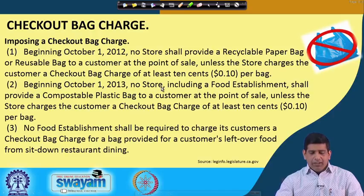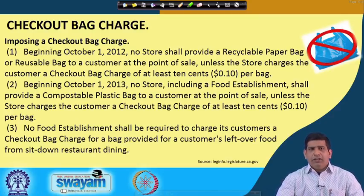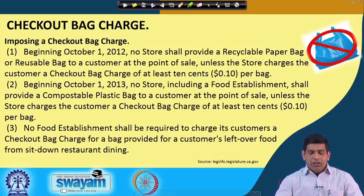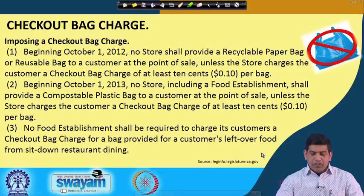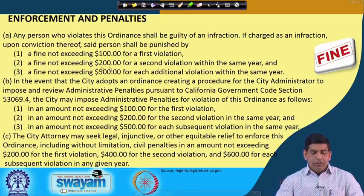Charging 10 cents per bag will deter people and encourage at least some of them to bring their own bag, especially if you go to the market and need 8 or 10 bags — that is almost close to a dollar. Beginning October 1st, no store including food establishments will provide a compostable plastic bag unless they charge 10 cents. Stores are required to charge customers a checkout bag charge for bags provided. Penalties include a fine of 100 dollars for the first violation, 200 dollars for the second violation within the same year, and 500 dollars for each additional violation within the same year. So it is strict enforcement.